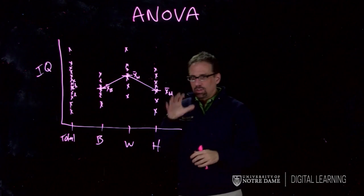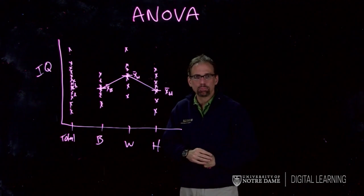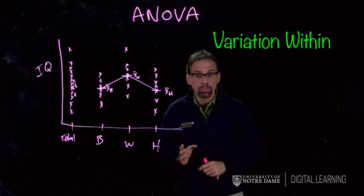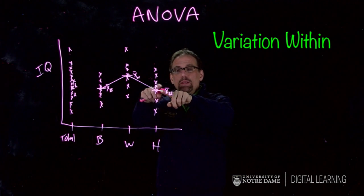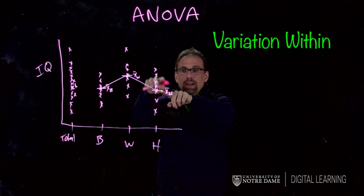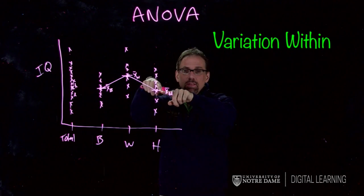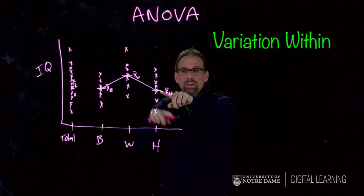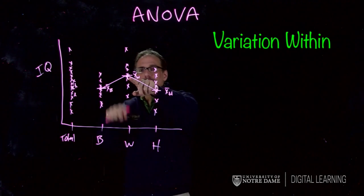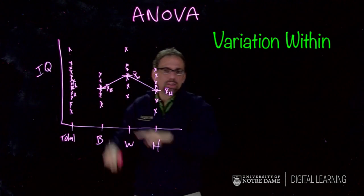Now there are two kinds of variation in this data. There's the variation within each group. I have variation from the Hispanic mean - all those differences of scores from the mean within the Hispanic group. That's an important term: within. Same thing with Whites - I have variation within the White group and variation within the Black group.